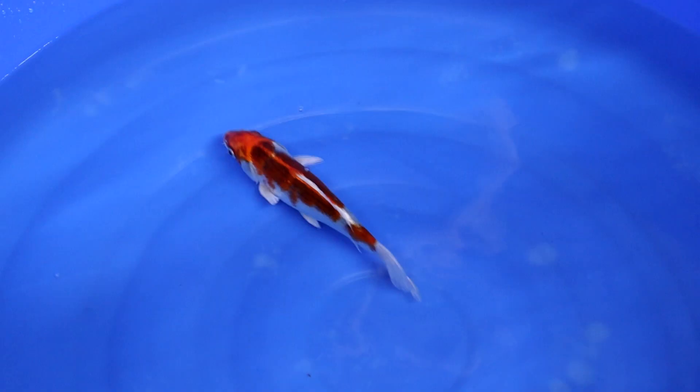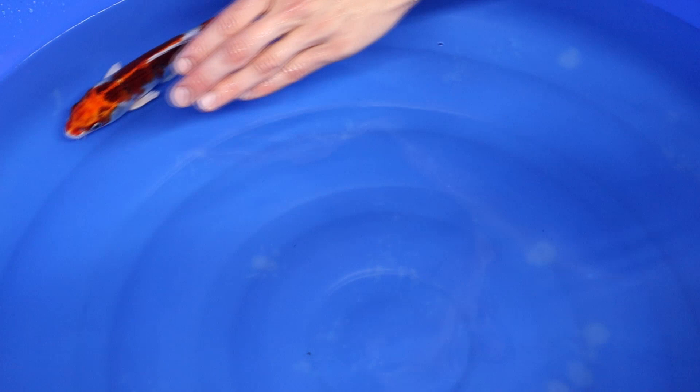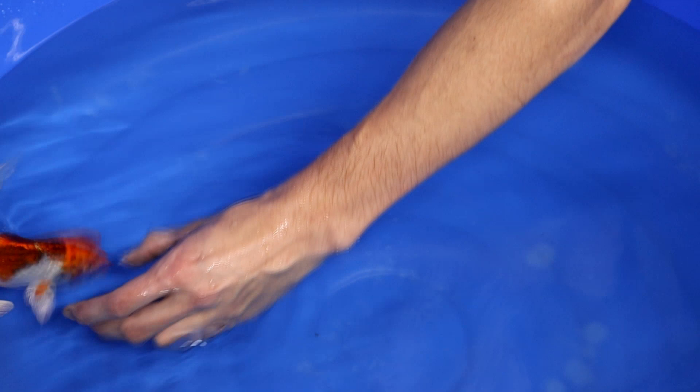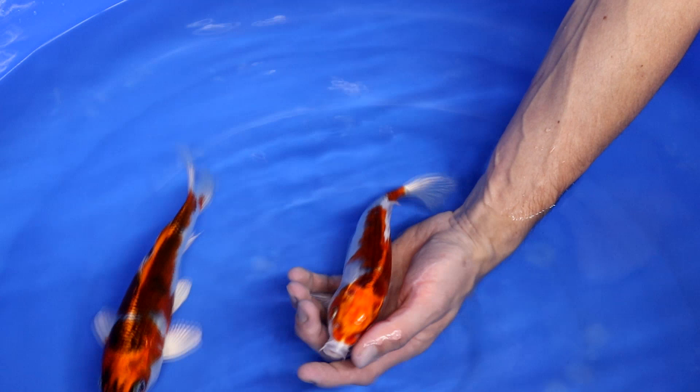Of course, you want a balanced pattern. So on the left and the right side, the heaviness of the orange pattern should be about the same. So this Kujaku actually is balanced. As you can see, the heaviness of the pattern is well divided over the entire body of the fish. So that is good.